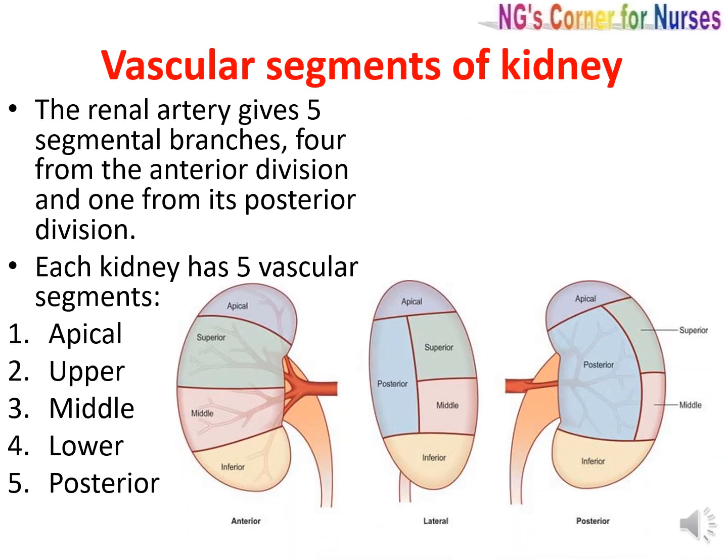Coming to the vascular segments of the kidney — the renal artery gives five segmental branches: four from the anterior division and one from its posterior division. So each kidney has five vascular segments: apical, upper, middle, and lower on the anterior aspect, and a posterior segment on the posterior aspect. On the posterior aspect, other segments are seen as parts of the apical and lower segments.